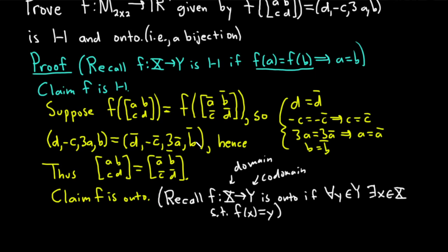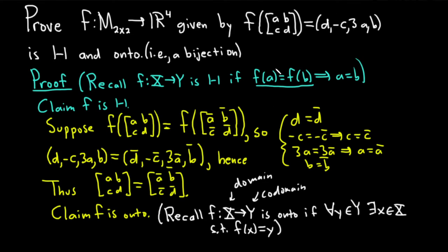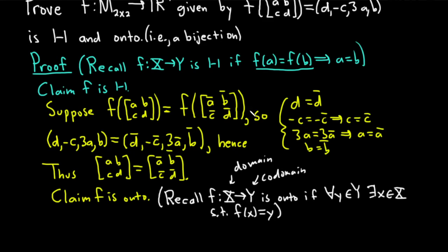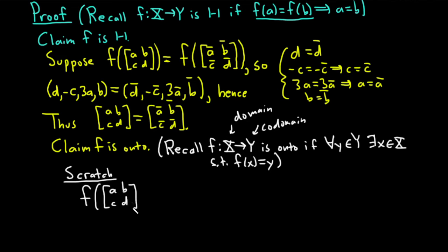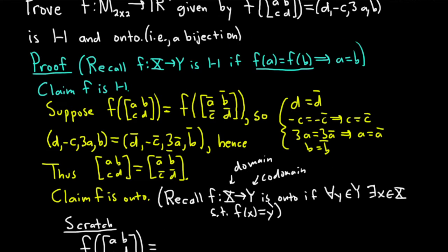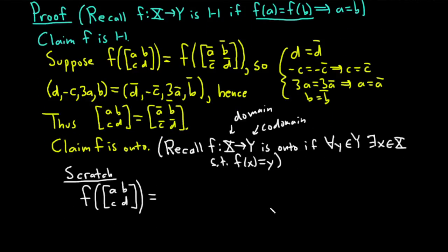We need to show this function is onto. For practical purposes, I'll first do scratch work — figure it out before writing the proof. Our function sends matrix [A, B, C, D] to (D, -C, 3A, B). You should know how to figure it out, and also how to write the proof.